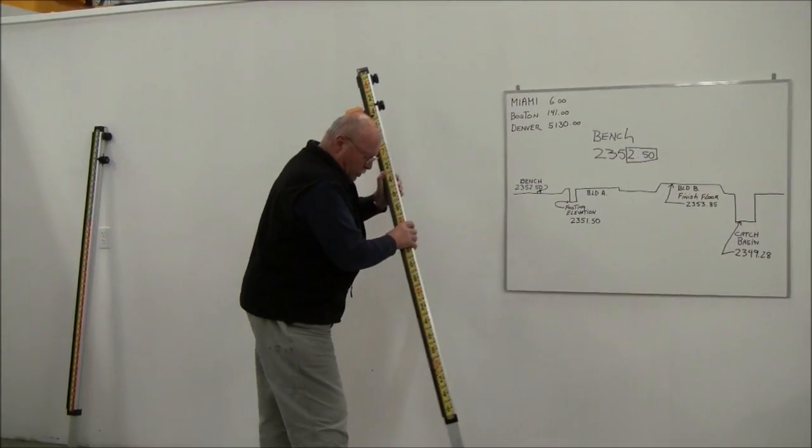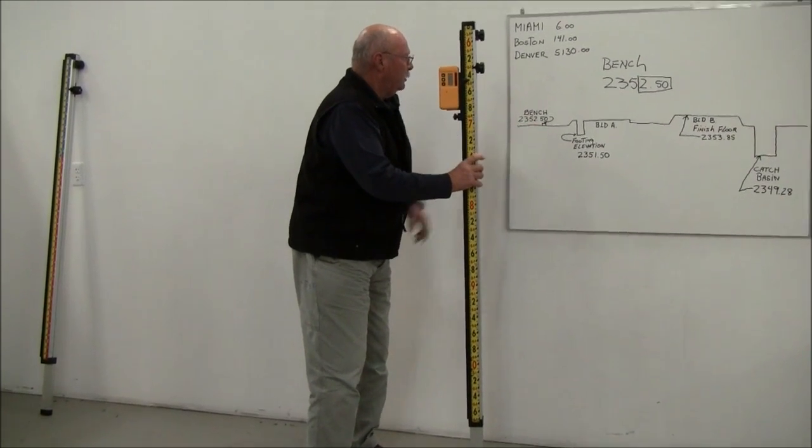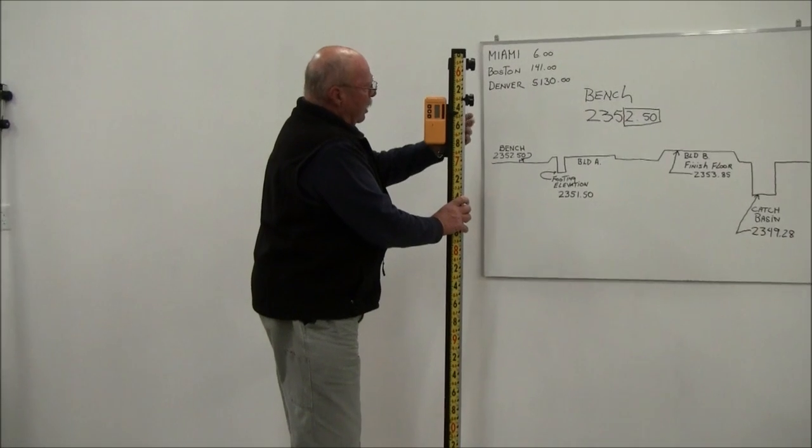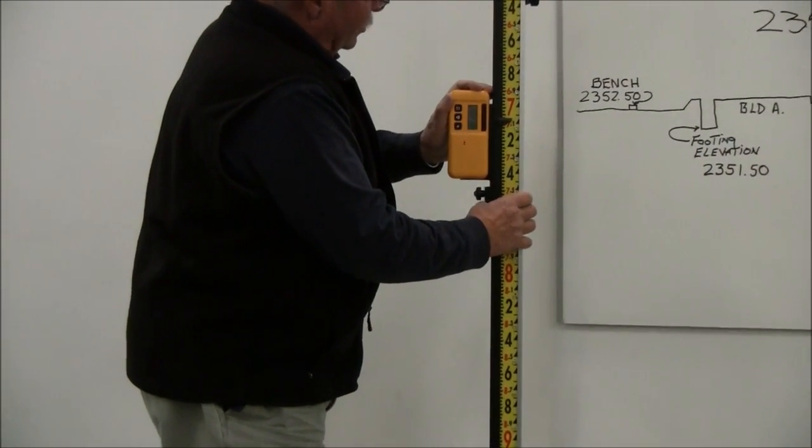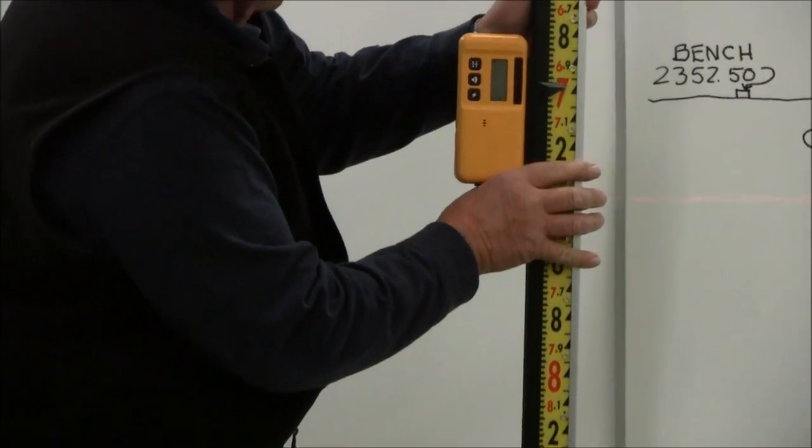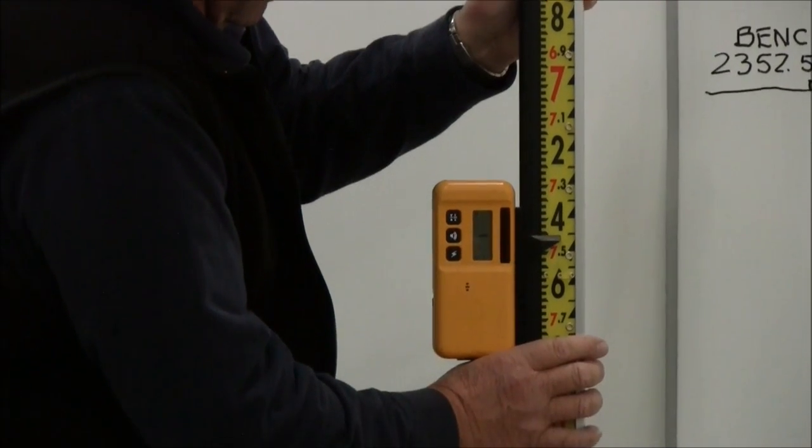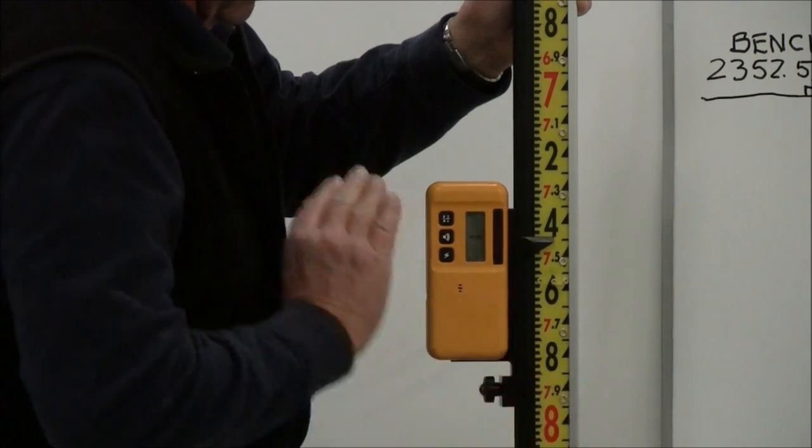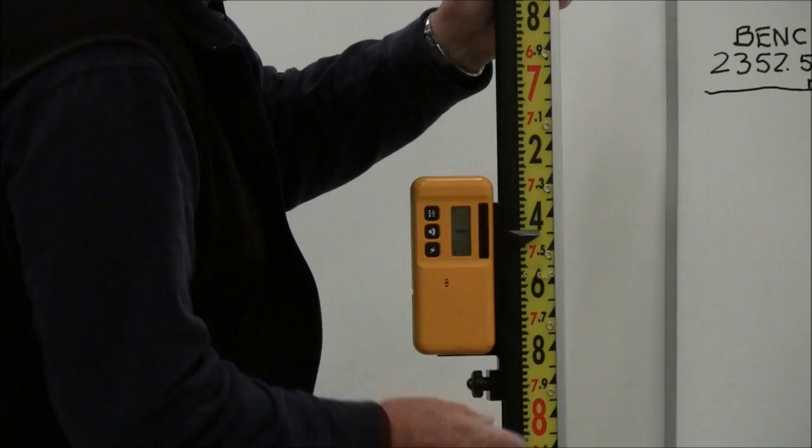So let's get to work here in terms of setting this rod up to this bench elevation. What I would do is walk over, set my rod on top of my bench right here, and then I'm going to run the receiver up and down until I pick up the steady tone. That's going to tell me that I'm on grade. Yep, down. All right, so that's grade right there. I've locked onto the laser. Now I'm going to lock my receiver down so it doesn't move.